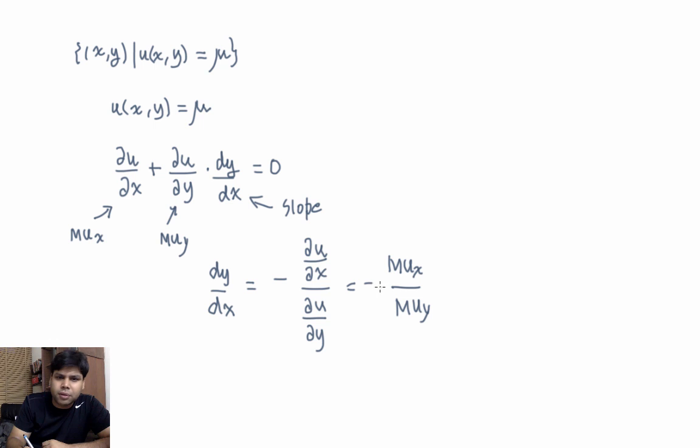It's negative of the ratio of MUx by MUy. So marginal rate of substitution is nothing but the absolute value of the slope of the indifference curve. In this case, that's going to be MUx by MUy. So this is a definition of marginal rate of substitution.